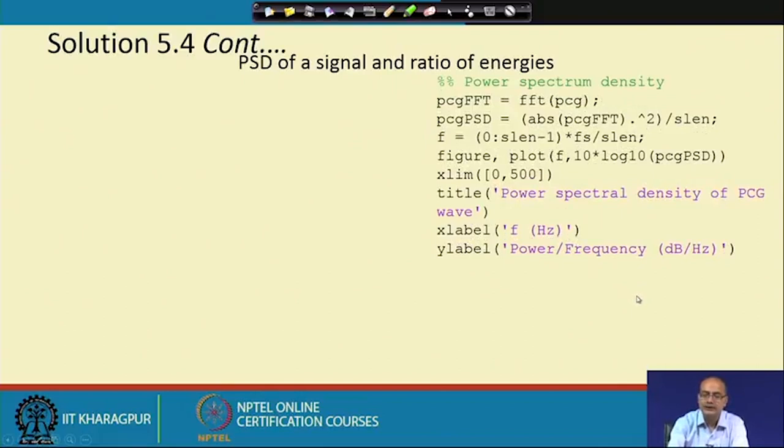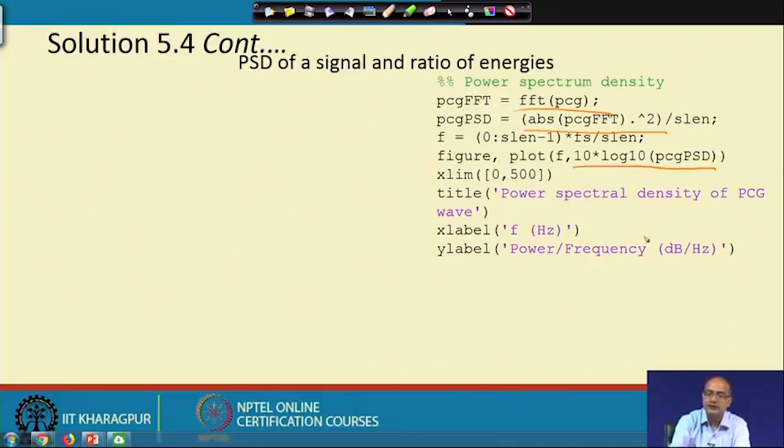Next, we go for the PSD. For that, we have to first take the Fourier transform of the signal, then we take the energy by taking the absolute value and the square of it. We create the frequency axis and plot the PSD in the dB scale. As the signals are sampled at 1 kilohertz, we get the signal from minus 500 to plus 500. We concentrate on the positive part, 0 to 500, to get a better view.